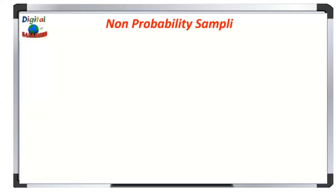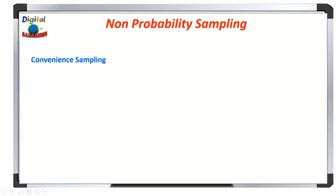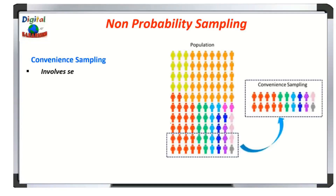In non-probability sampling, individuals are selected based on non-random criteria, and not every individual has a chance of being included in the study. This type of sampling is easier and cheaper to access, but you can't use it to make a valid statistical inference about the whole population. There are a few types of non-probability sampling. The first is convenience sampling — it involves selecting samples based on convenience, simply including individuals who happen to be most accessible to the researcher. This is an easy and inexpensive way to gather initial data, but there is no way to tell if the sample is a true representation of the entire population. It is also known as accidental sampling.